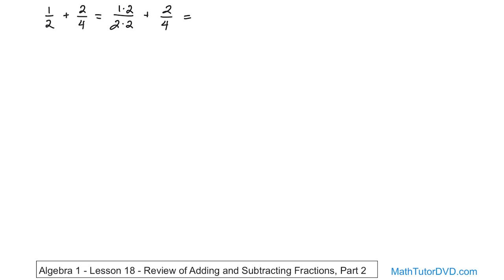Now when we do this, what we're going to have, one times two on the top is going to give you two. On the bottom, two times two will be four. So this problem basically is transformed into the following problem. Basically, this problem that we wrote down is the same as this one right here. And the reason is because one-half is exactly the same thing as two-fourths.